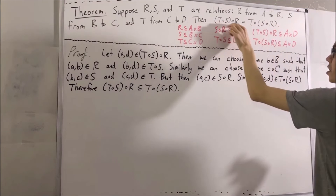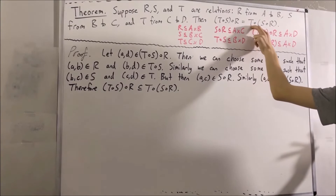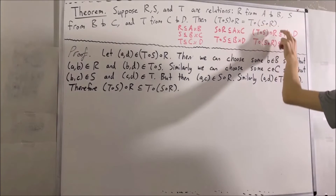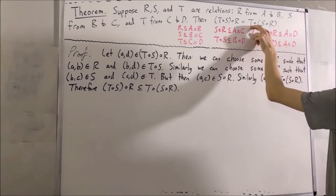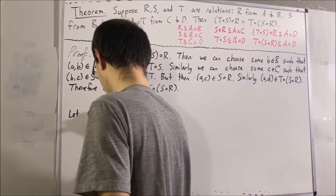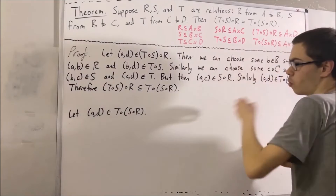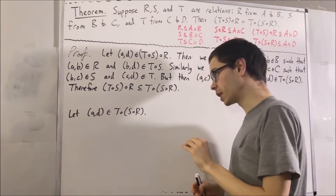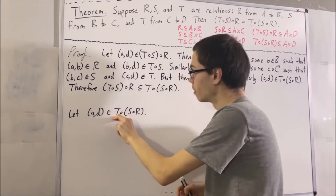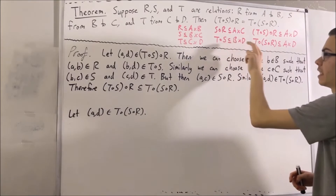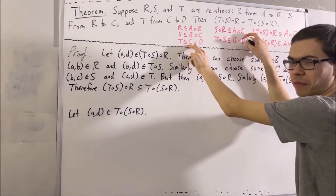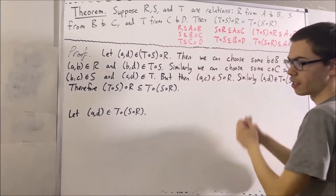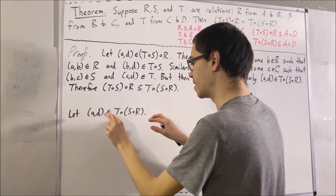Now we're going to show that everything in the second set is also in the first set. Let's consider an arbitrary element of this set — everything in this set is an ordered pair, so let's say our arbitrary element is (a, d). We are an element of a composition — specifically, a composition of (s ∘ r) and t. Note that s ∘ r goes from A to C and t goes from C to D, so C is our intermediate set. This means we can choose an element c in C such that (a, c) is an element of s ∘ r and (c, d) is an element of t.